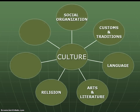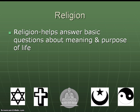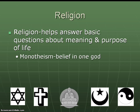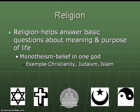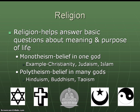Up next is religion. Religion is very important because humans have a natural curiosity about the purpose of life. Religion helps to answer those basic questions: Why am I here? What am I supposed to be doing? What happens after I die? The world's religions fall into one of two categories: monotheistic or polytheistic. Monotheism is the belief in one god — Christianity, Judaism, and Islam are the three biggest monotheistic world religions. Polytheism is the belief in many gods, and polytheistic religions include Hinduism, Buddhism, Taoism, and others.